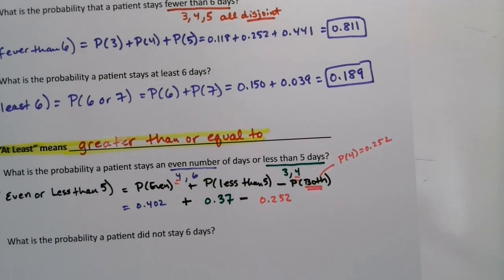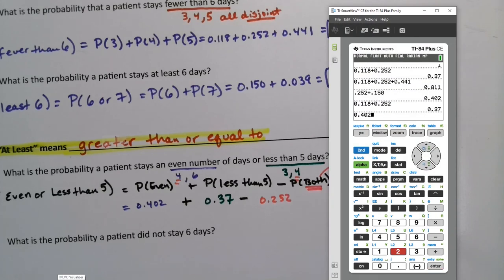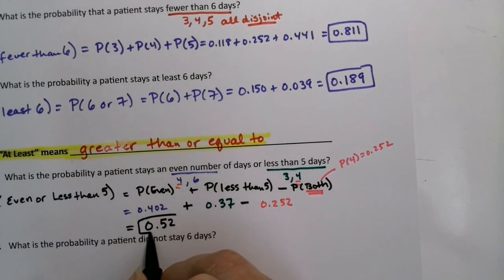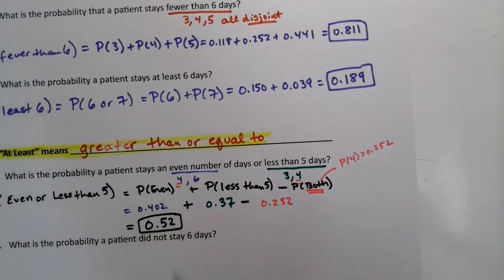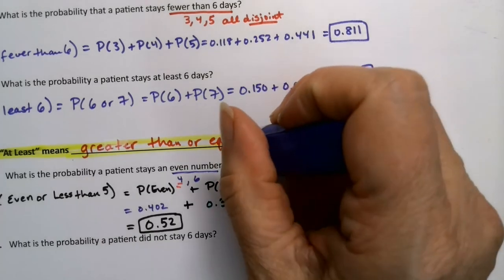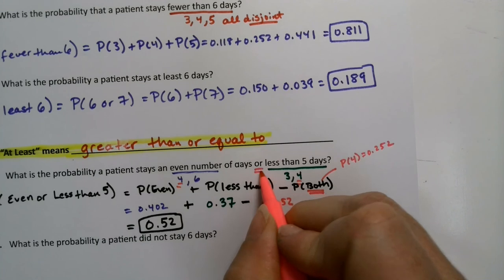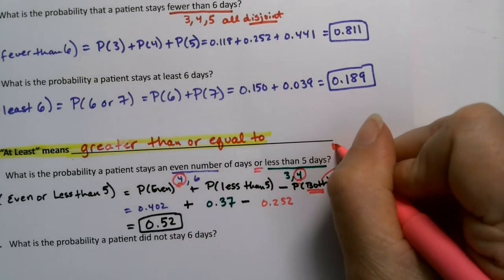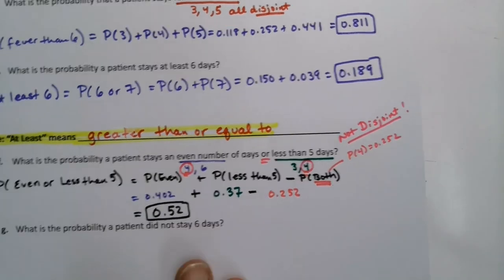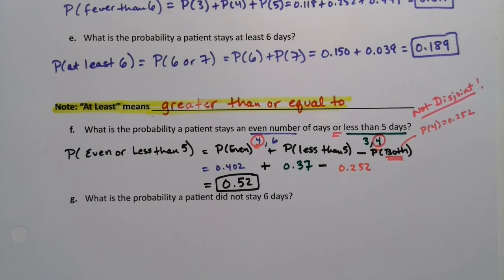I'm going to grab my calculator and make it do the work for me. I'm going to take 0.402 plus 0.37 minus 0.252, and I get 0.52. So that's the result. This one was not disjoint. They're not disjoint.